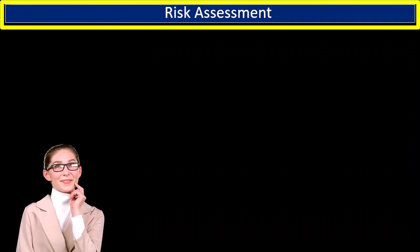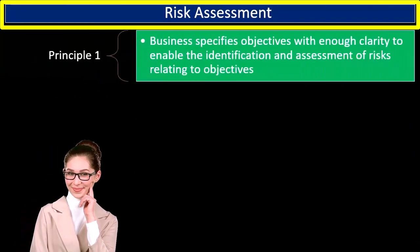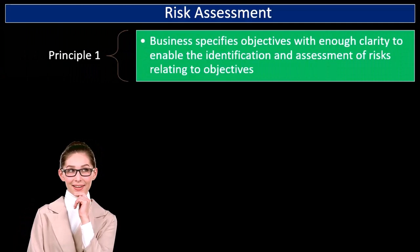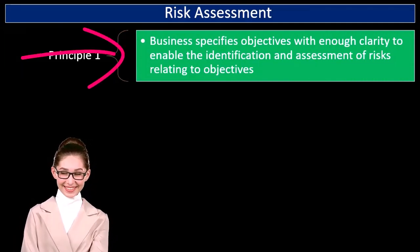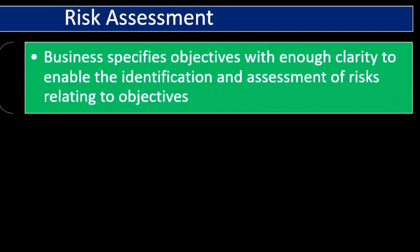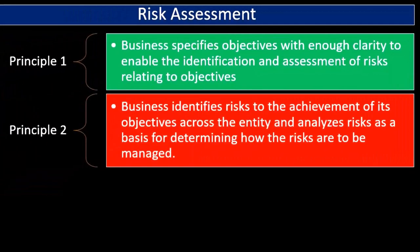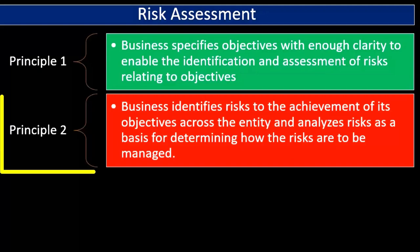Next we'll look at risk assessment principles. Principle number one: the business specifies objectives with enough clarity to enable the identification and assessment of risks related to those objectives. When thinking about risk, we need to know exactly what the objectives are, so that the more clearly we define them, the more clearly we can assess what those risks are and take action.